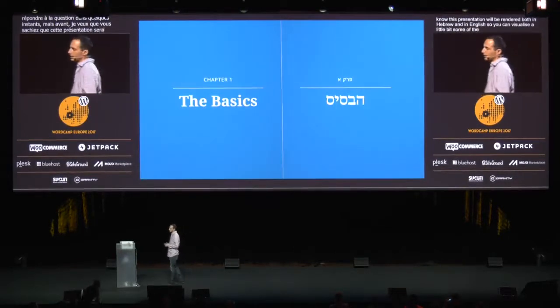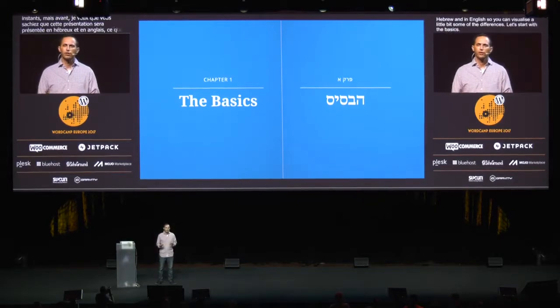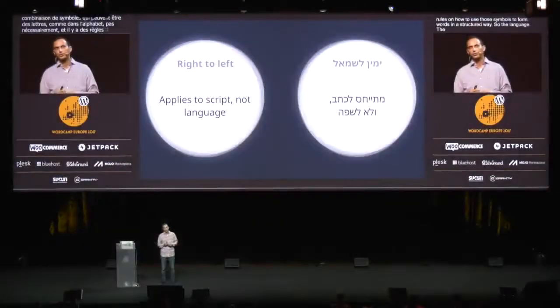Let's start with the basics. What is a language? A language is a form of human communication, comprising words in a structured way — no directionality in that. But a language is often, not always, rendered in writing. And when you write it, you do that using a writing script. A script is the combination of symbols — symbols can be letters like an alphabet, but not necessarily — and the rules on how to use those symbols to form words. The directionality actually applies to the script, not to the language.